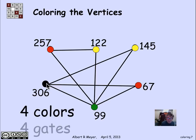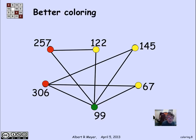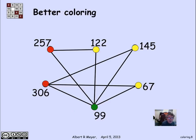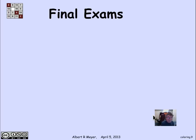We did it with four colors, meaning we could have gotten away with four gates. The colors tell us which aircraft to assign to which gate: 257 and 67 can both be assigned to the red gate because they are not on the ground at the same time — there's no edge between them. 122 and 145 can be assigned the yellow gate, and so on. However, this was not the smartest way to color. A better coloring uses only three colors — red, yellow, and green — so three gates suffice.